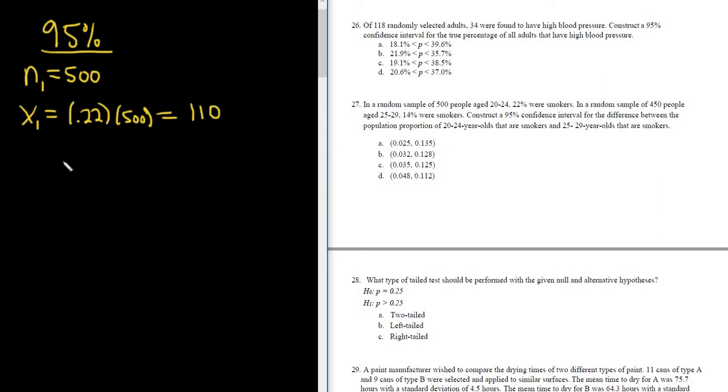And then now we'll do N2. That's 450. That's the second sample. So N2 is 450. These are observations. And then X2 would be the successes. So in this case, 14% were smokers. So 14% of, of means multiply. So 14% of 450. This would be 0.14 times 450. So 63.